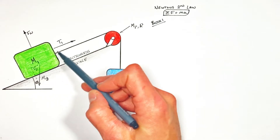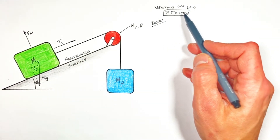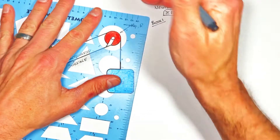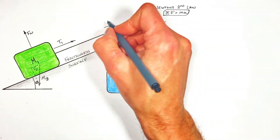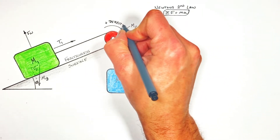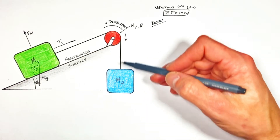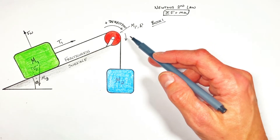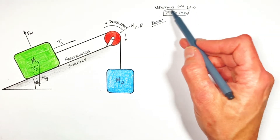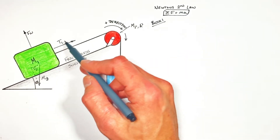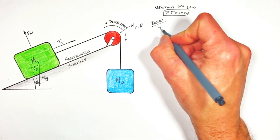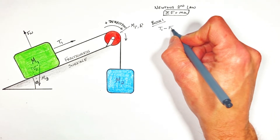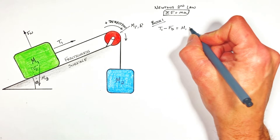In order to fit these two forces — tension and force down the hill — into Newton's second law, we need to establish a positive direction. In this problem, we're going to say that anything up the hill is in the positive direction, and anything acting downward on the hanging block is also going to be in the positive direction. Getting back to Newton's second law, the sum of all forces on this block is T1 acting in the positive direction, minus the force down the hill, and we set that equal to M1 times A.